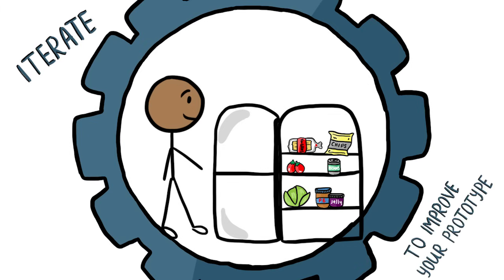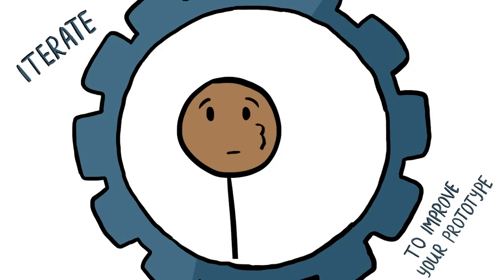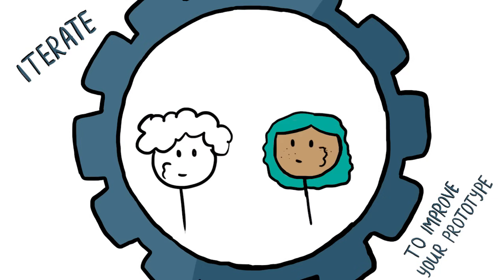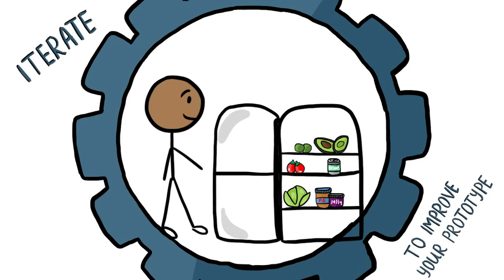Iterating means making changes based on test and user feedback. You realize you've got ingredients for tacos, so you start making veggie tacos. You try one and think it's kind of dry. You have other people try it, and most agree it's too dry, so you go back to the kitchen and start iterating again.